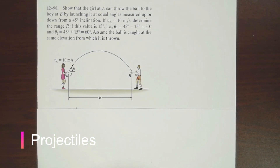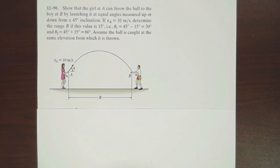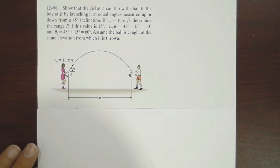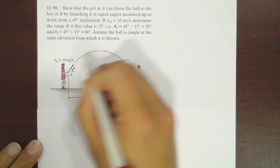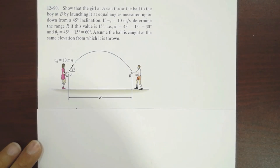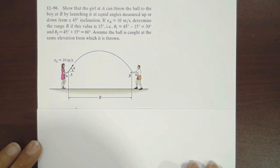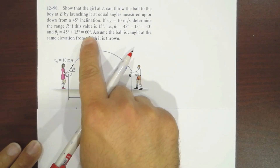Welcome to this new tutorial for lecture four in dynamics from Hibbeler's book. We have here a projectile problem. We have a ball going from point A to point B with an initial velocity of 10 meters per second, and we have two angles: 30 degrees and 60 degrees.